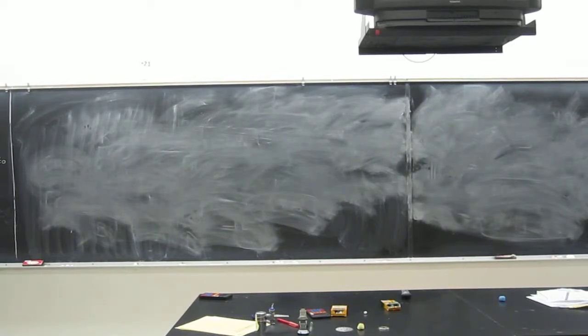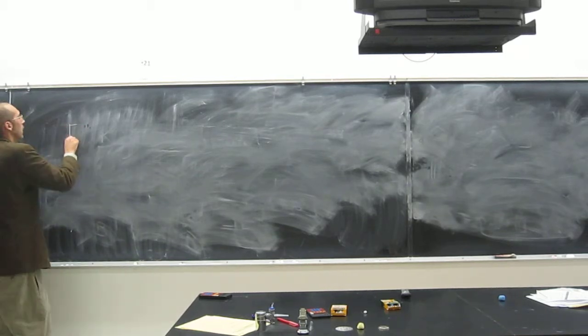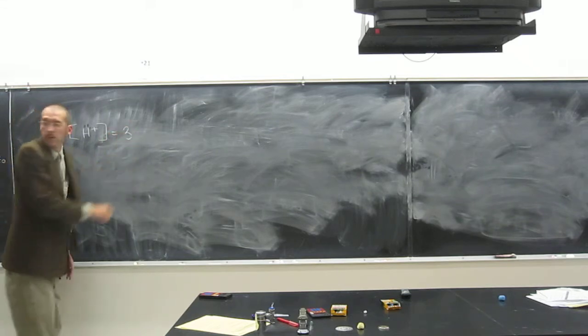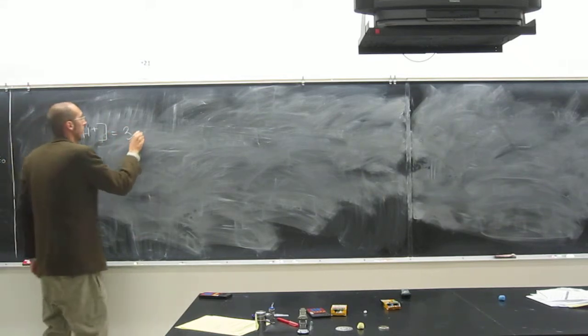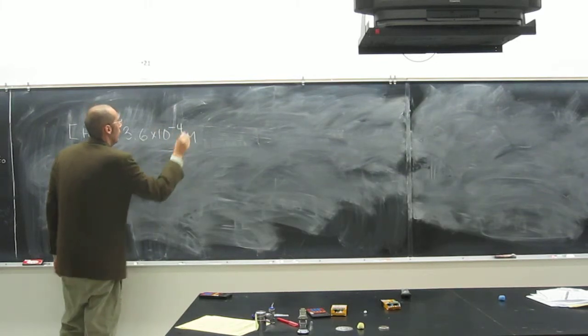Okay, let's try this one. Calculate the pH of the solution which the H-plus concentration equals 3.6 times 10 to the negative fourth mole.